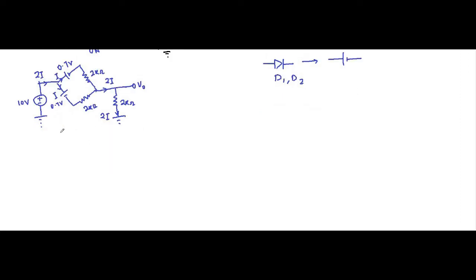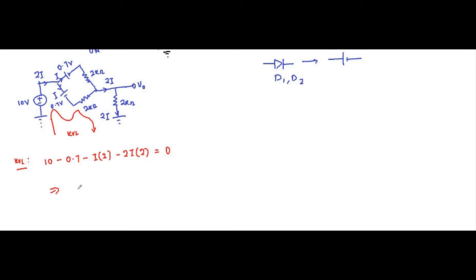Applying KVL from one ground to another ground following this path: 10 minus 0.7 minus I times 2 kilo ohm minus 2I times 2 kilo ohm equals 0. That gives 9.3 minus 6I equals 0, where 4I plus 2I equals 6I. So I equals 9.3 divided by 6, with units of volt divided by kilo ohm.